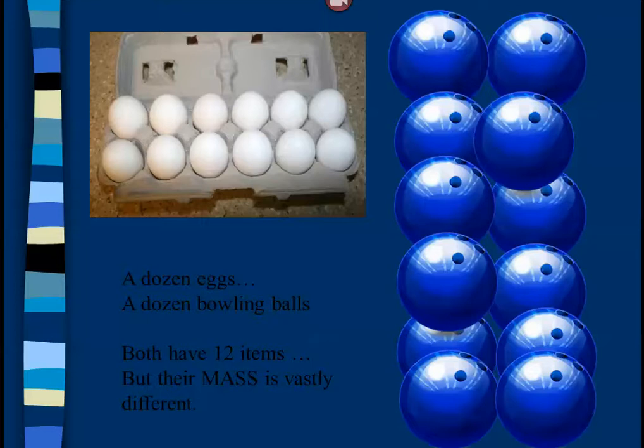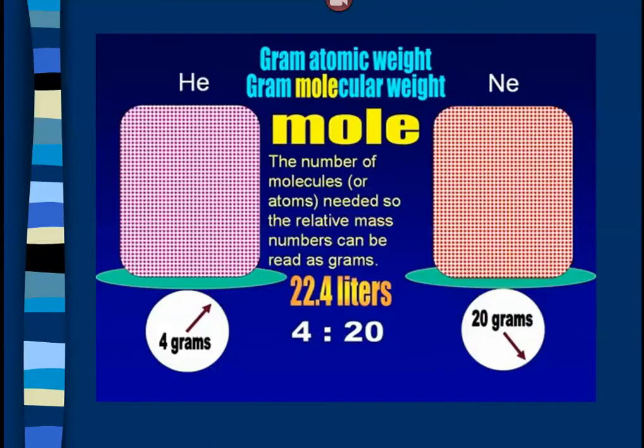Again, a mole is just a number of things, just like a dozen. Take a dozen eggs and a dozen bowling balls — it's both 12 things. But what's not the same is their mass; their mass would be way, way, way different. So the elements of the periodic table are the same way.